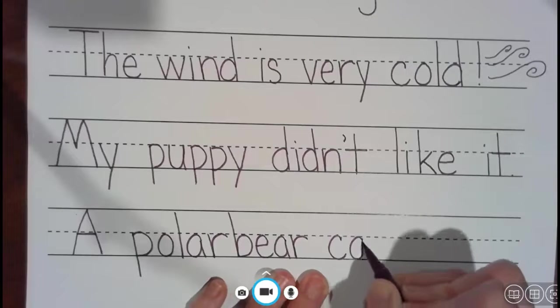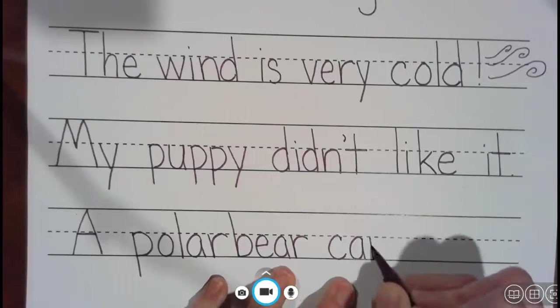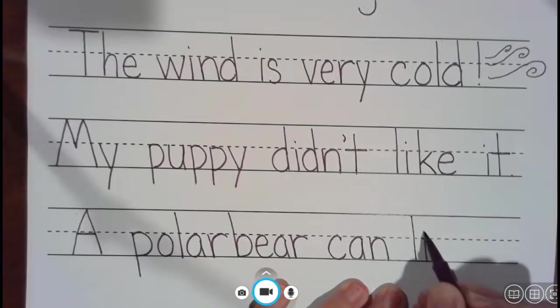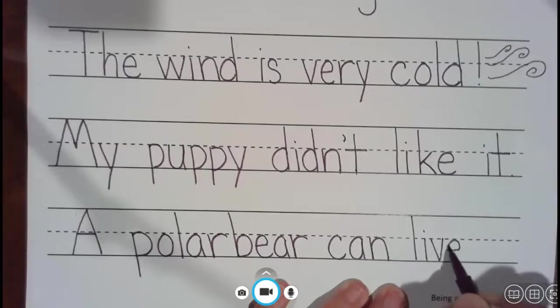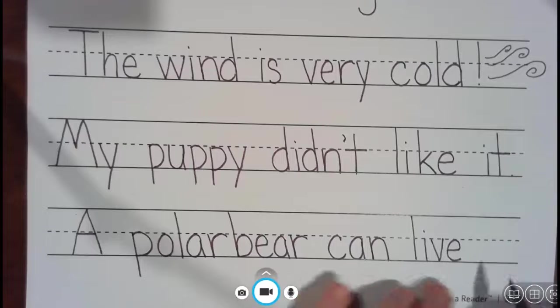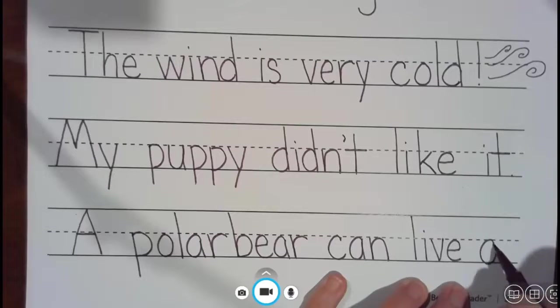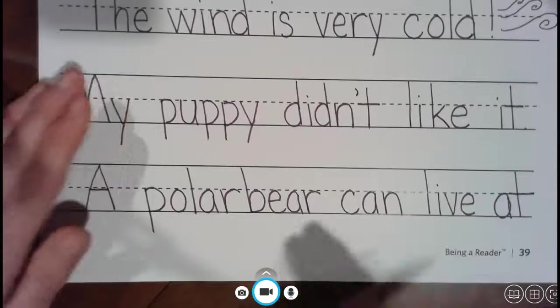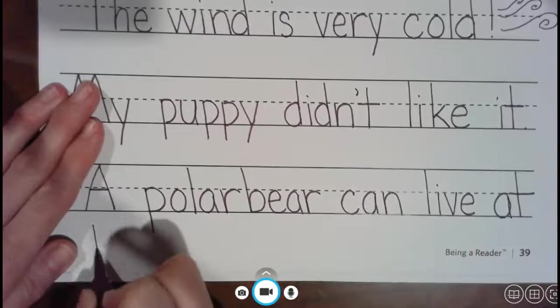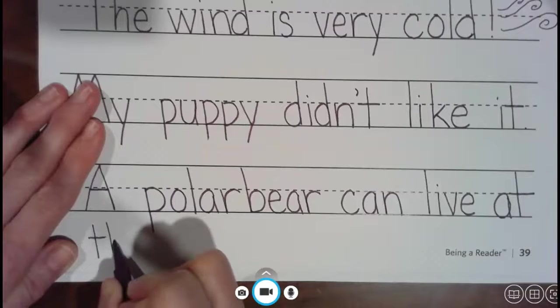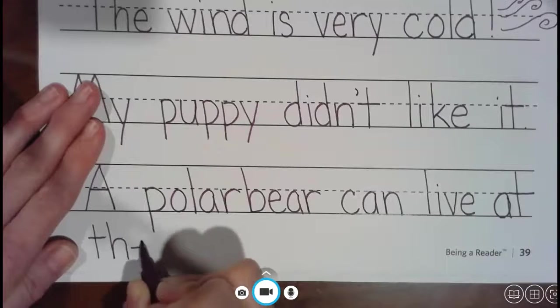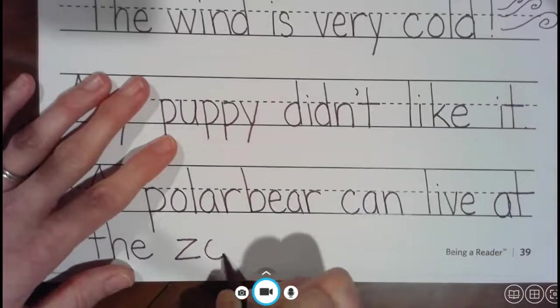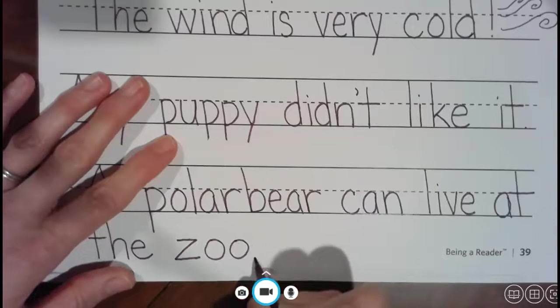A polar bear can, C-A-N, live. I'm running out of space, I'm gonna have to use the part at the bottom where there's no lines. A polar bear can live at, A-T. Let me scoot it up. At the zoo. That's how I got our Z. And I had to think, what could I write? A polar bear can live at the zoo.